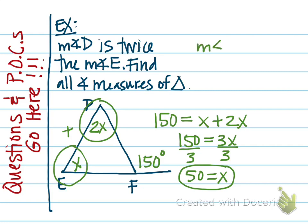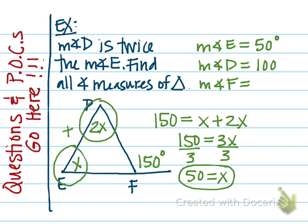Now we can find all three angles. Angle E equals X, so the measure of angle E is 50 degrees. Angle D is twice that, so angle D equals 100 degrees. That means angle F has to equal 30 degrees so that the three add up to 180. You can also figure out angle F a different way: since the 150-degree exterior angle is supplementary with angle F, you can subtract 150 from 180 to get 30 degrees.